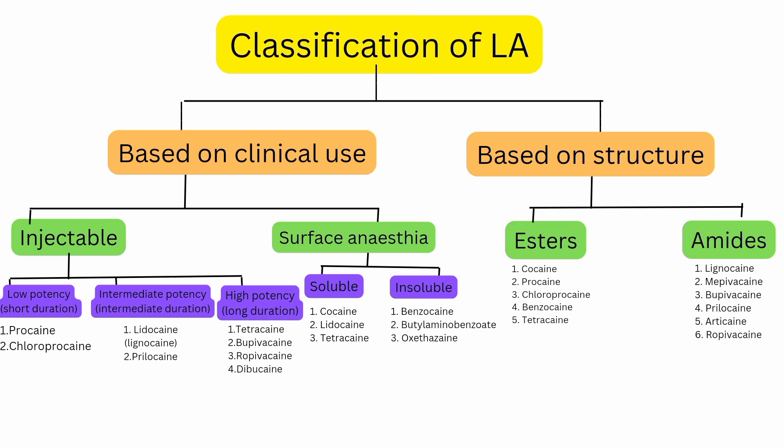For short-note exam questions on any individual drug, you can first classify it, then use the brief introduction points given about each medicine to complete your answer. Revising classifications will cover the maximum syllabus. The suggested approach is to write the classification on one page as-is, with important points noted in brackets — so that last-minute revision is easy and everything is on one page.